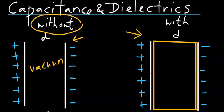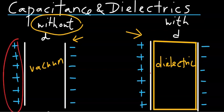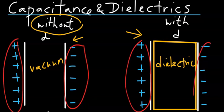And in this figure, what you have is a parallel plate capacitor — the same capacitor — but with dielectric in between the plates. The plates, in both cases, contain the same amount of charge, Q.